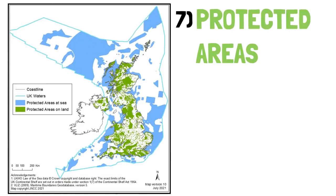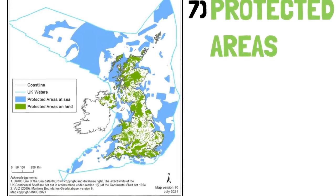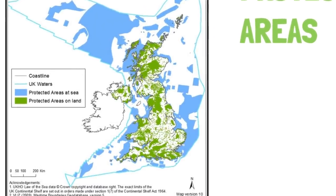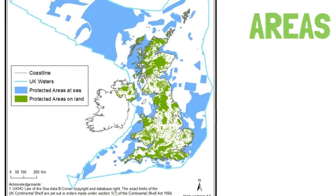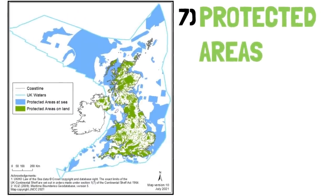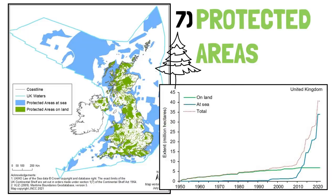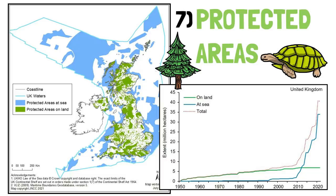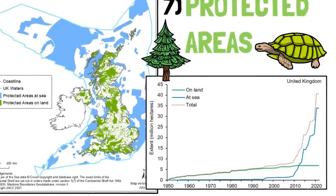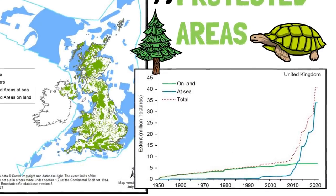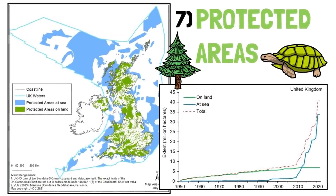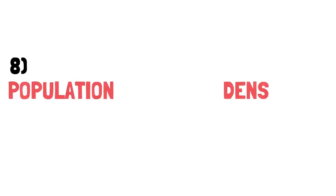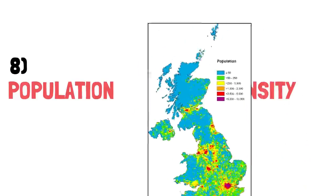This 2021 map shows all areas within the UK that are protected — green for land, blue for sea. Roughly 20 to 30 percent of the UK's territory appears to be protected. Land protection began surprisingly early, dating back to the 1950s on this chart, and has grown immensely since. Sea protected areas saw a gigantic leap from 2010 onwards — a good sign that successive governments have been taking seriously the importance of safeguarding the environment and nature.